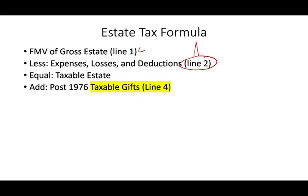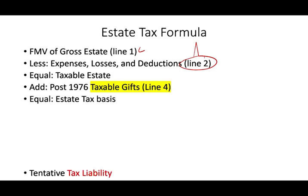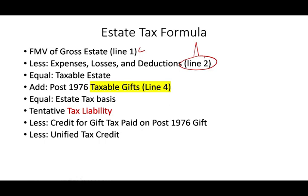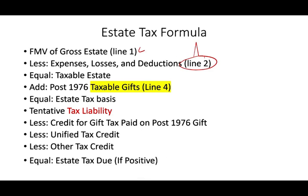Then we add to the taxable estate any taxable gifts — that's line four — and we already learned about taxable gifts; that's why they are connected. That equals the estate tax basis. Then we compute our tentative tax liability, deduct any taxes paid on post-1976 gifts, take the unified tax credit we discussed in the gift tax session, and potentially take other credits if available. Then we arrive at the estate tax due. This is the complete formula.